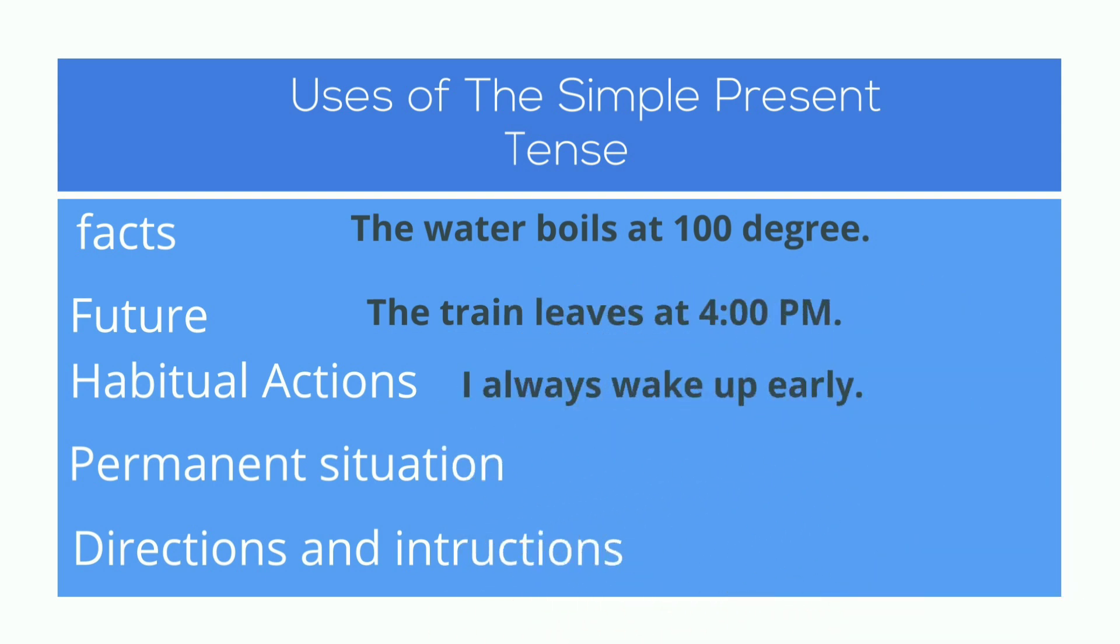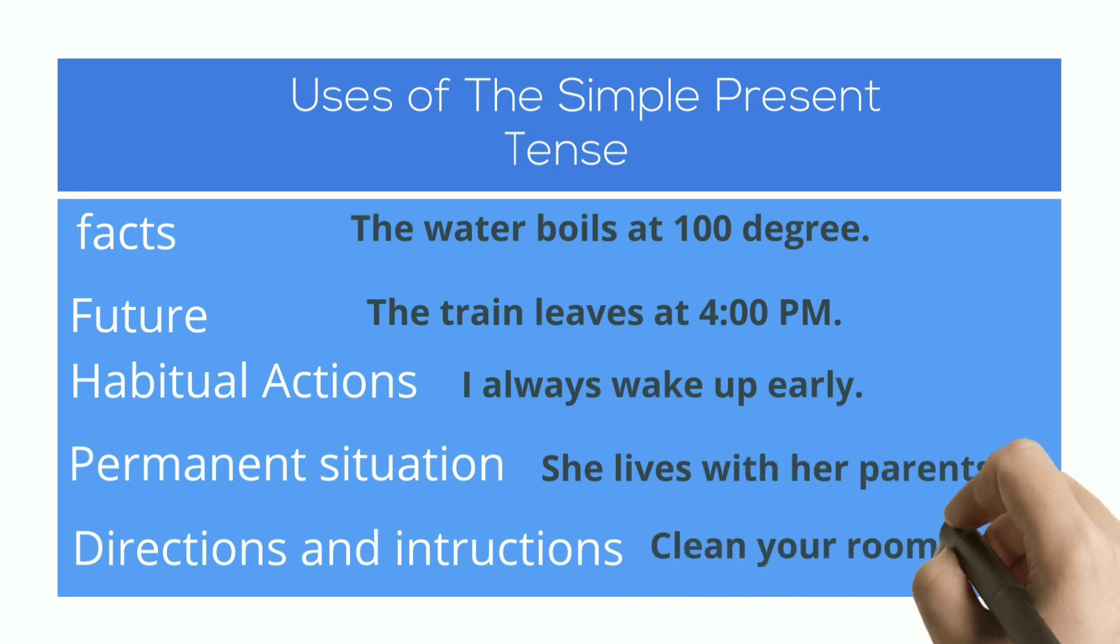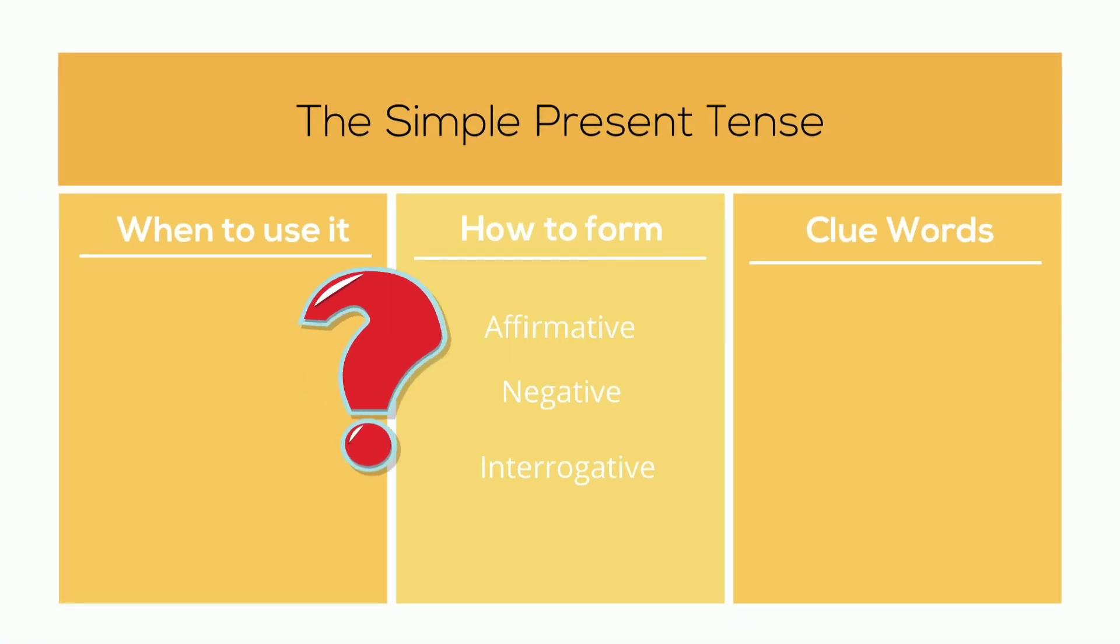I always wake up early. This is an action that happens regularly. She lives with her parents. This is an example of a permanent situation. And clean your room. This is an instruction, and that is why I use the simple present tense in all these sentences.